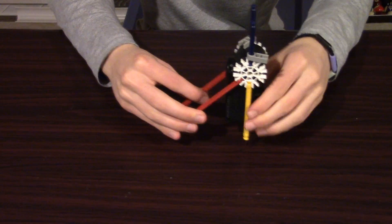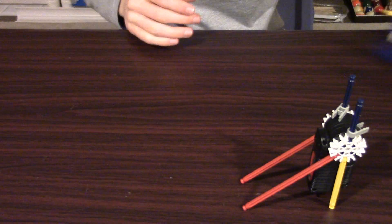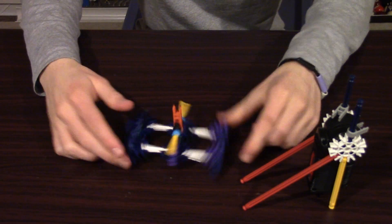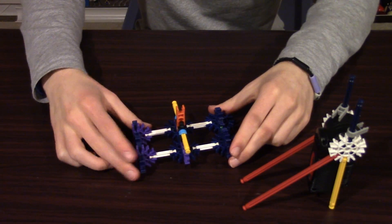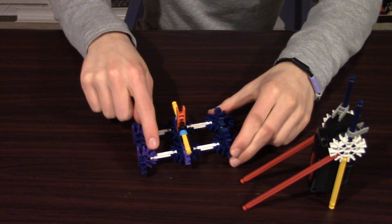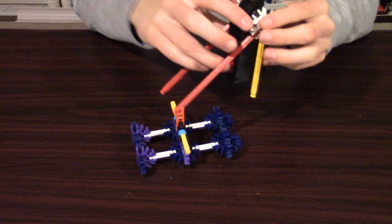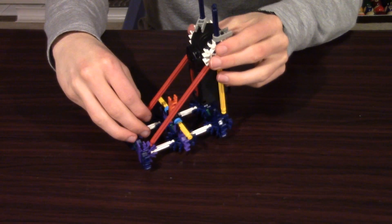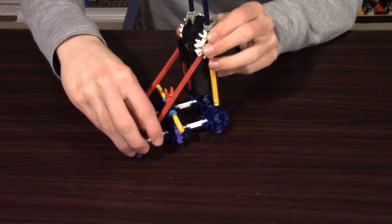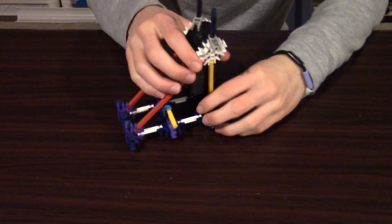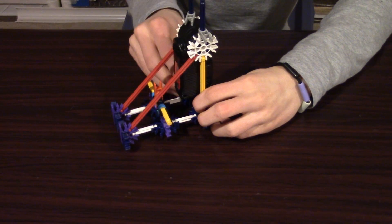All right, so now that we have this, we're ready to attach it to the base. So we're going to get out our base, and the base is completely symmetrical except for these two on over here, which are designed to accept these two red rods. So those go over there, and the yellow ones connect over here.